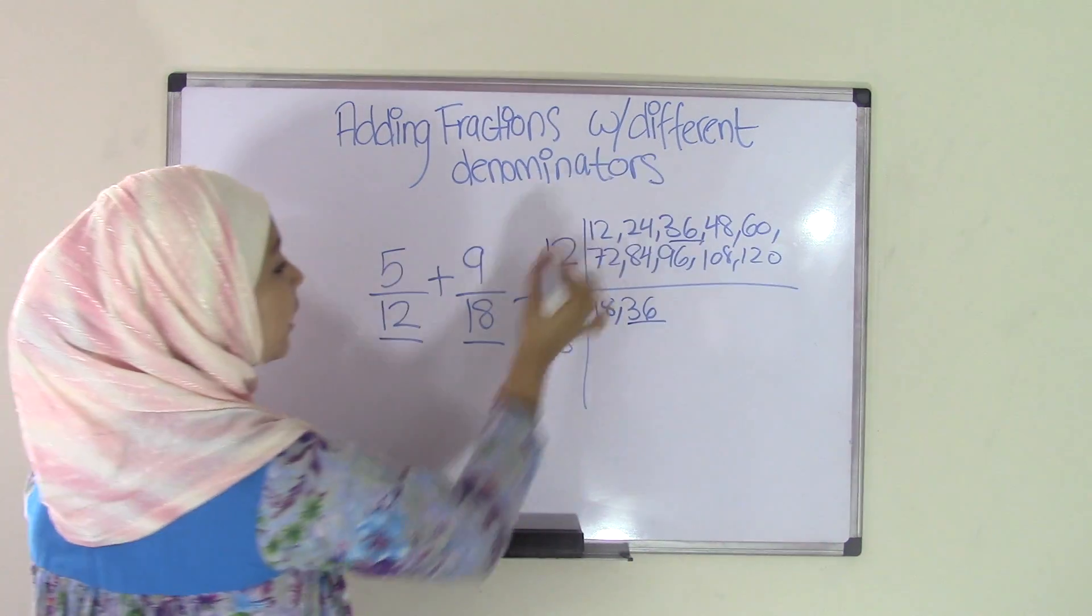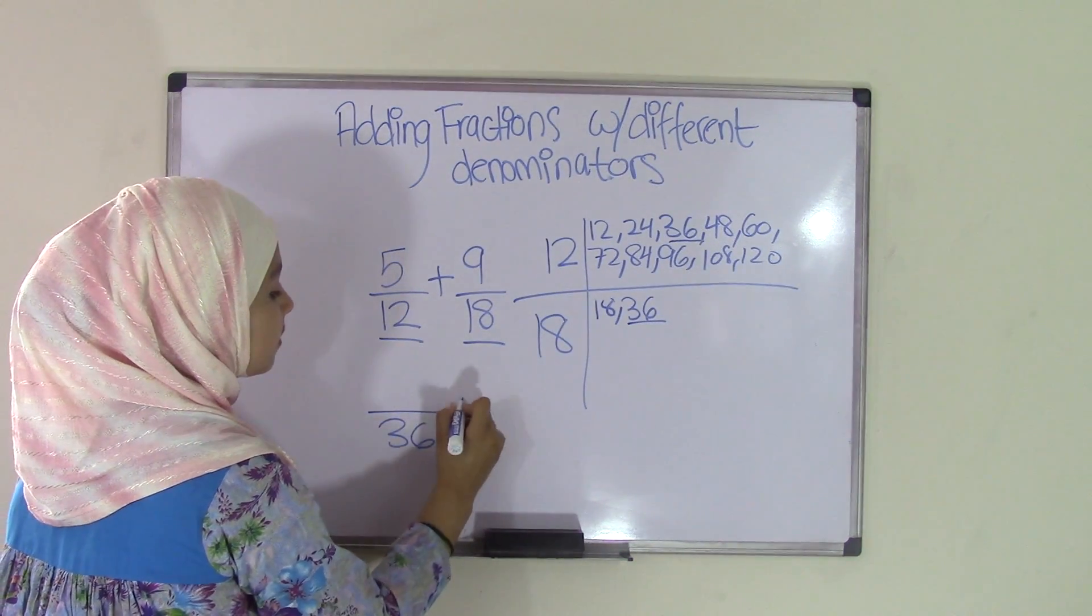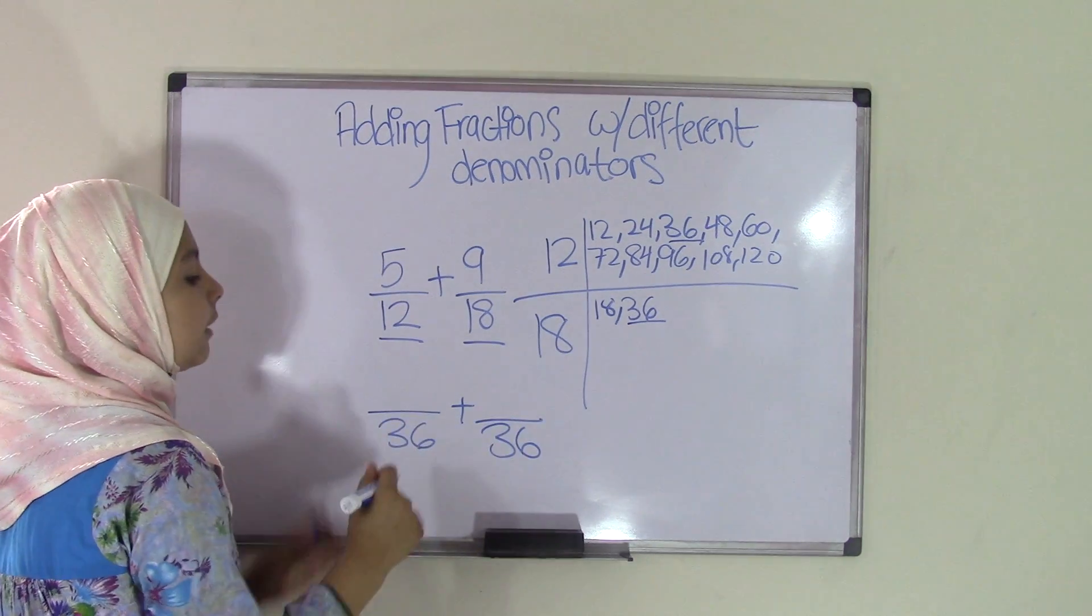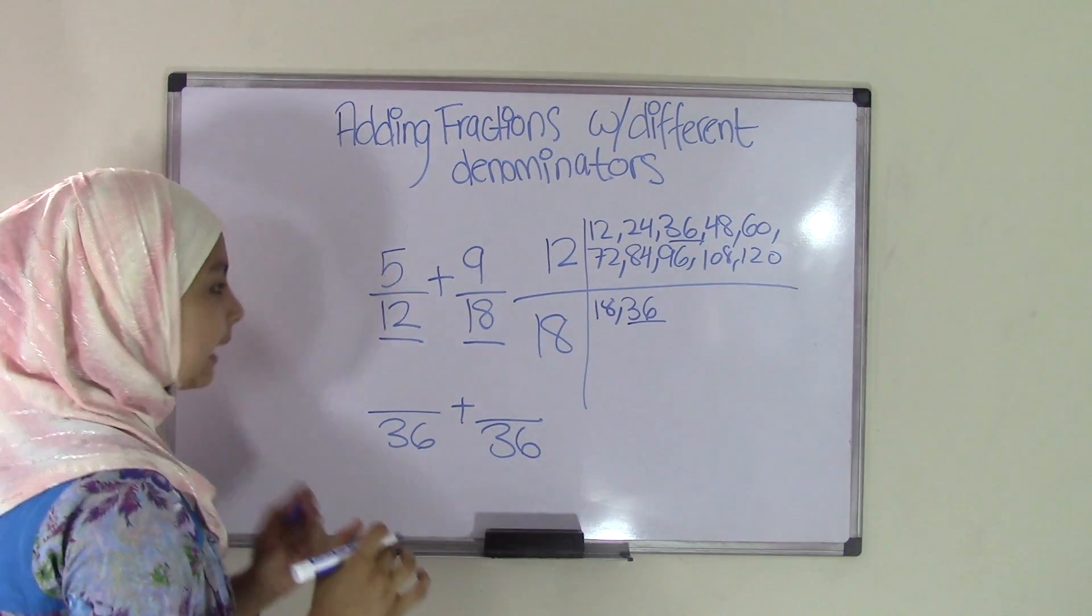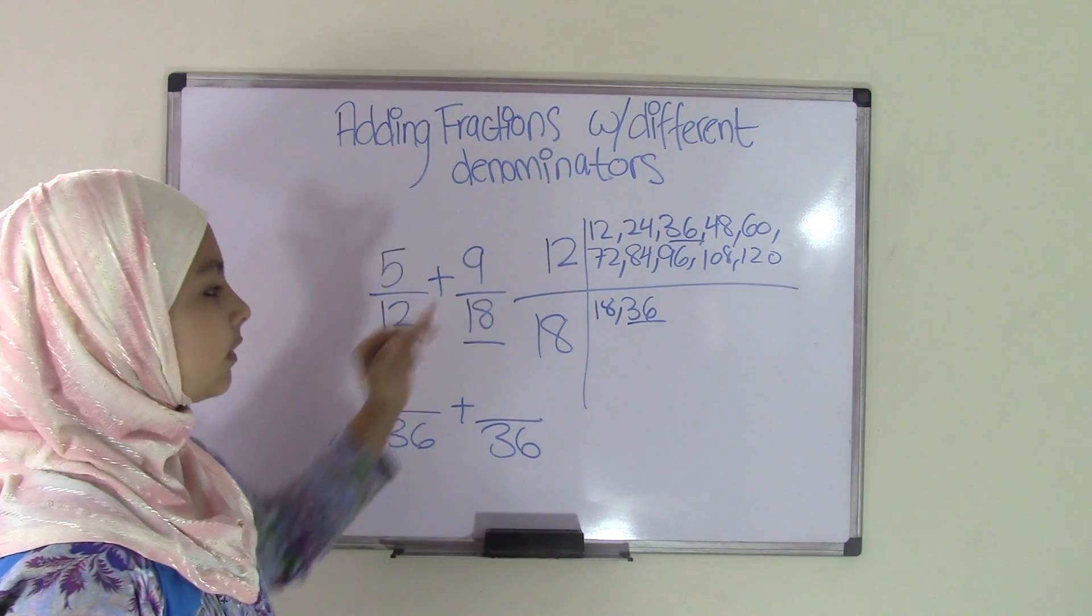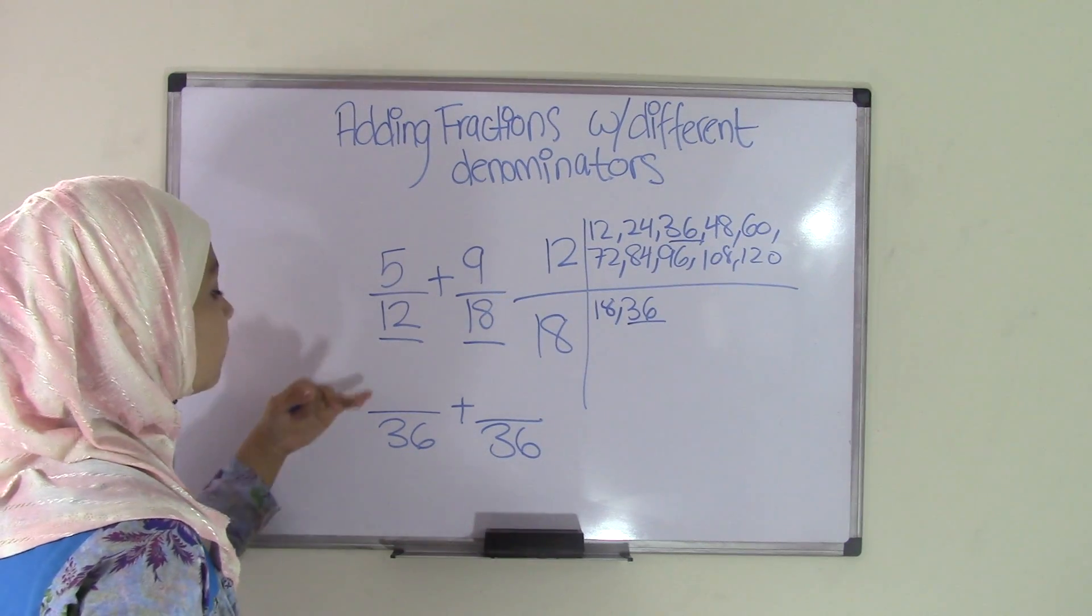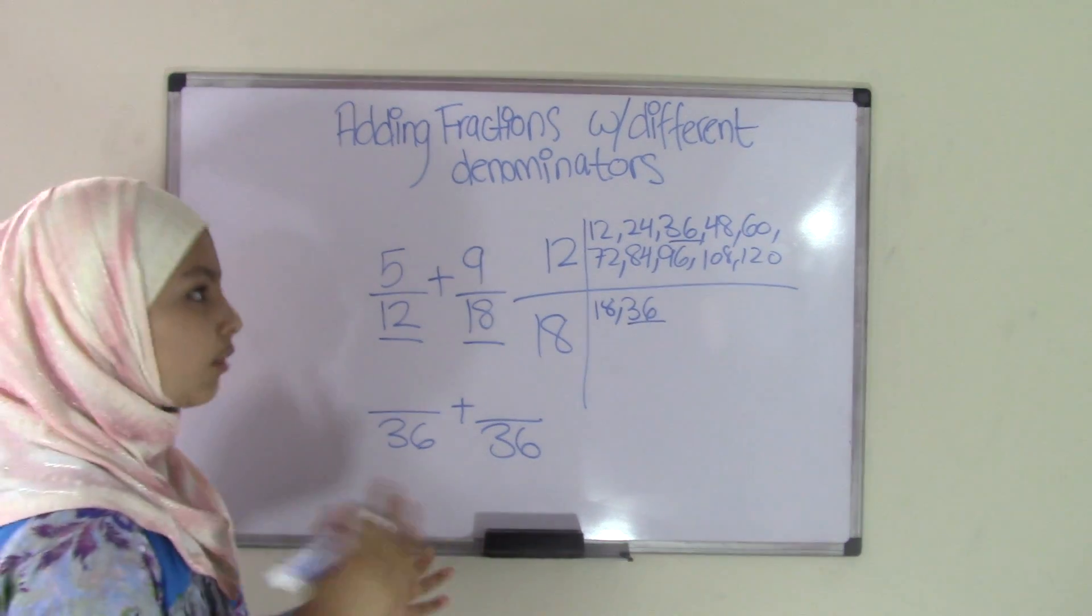What I'm going to do is come over here, write 36 plus 36 as the denominators. I'm going to leave the numerators blank, and now, remember this, you can't just take 5 and 9, the numerators, and put them here because that changes the fractions. Because 5/12 and 5/36 are two different fractions.